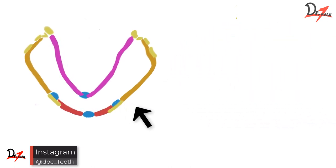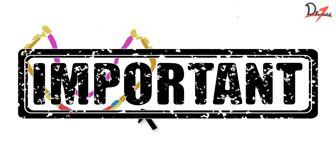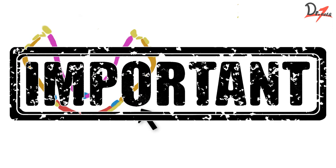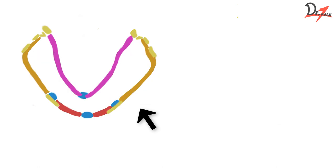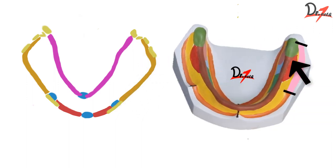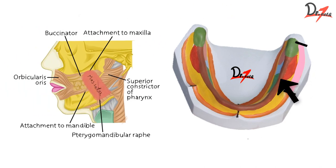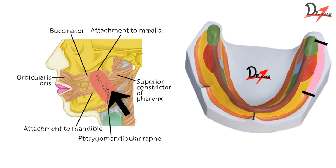Now let's see what is the masseteric notch. Remember, the masseteric notch is a very important landmark — one of the most frequently asked landmarks. The buccal vestibule extends from the buccal frenum till the retromolar pad. The thickness of the buccal vestibule is influenced by the masseter muscle, as you can see in this picture.